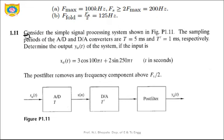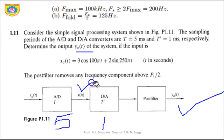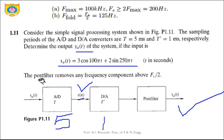Consider the signal processing system in figure p1.11. The ADC has a sampling period T = 5 milliseconds and the DAC has T' = 1 millisecond. The input is X_a(T) = 3cos(100πT) + 2sin(250πT). The post filter removes any frequency component above FS/2. We need to determine the output y_a(T).